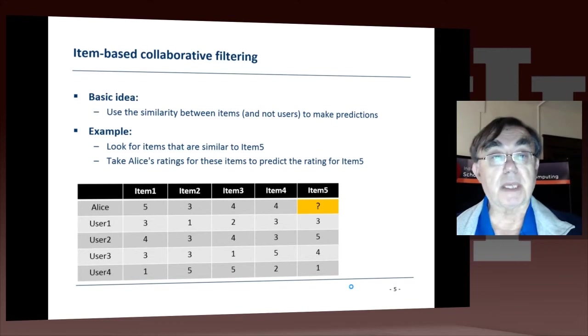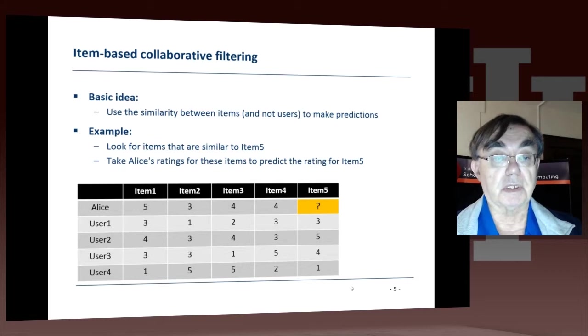In user-based collaborative filtering, you took a set of users—users' points in the space of items—and you use that to make predictions. Now we're looking at items. Items live in the space of users, and we're trying to find items that are similar to each other, so we can use them to make predictions.